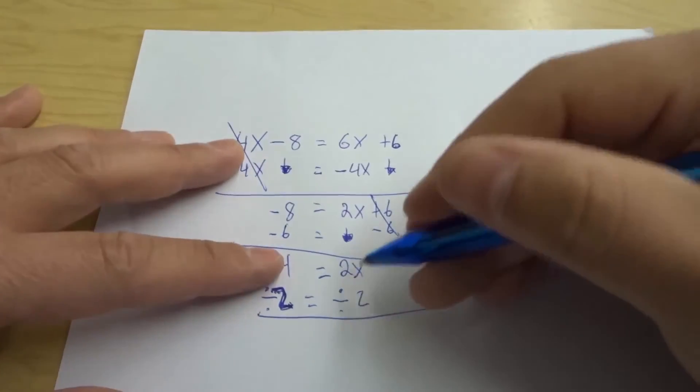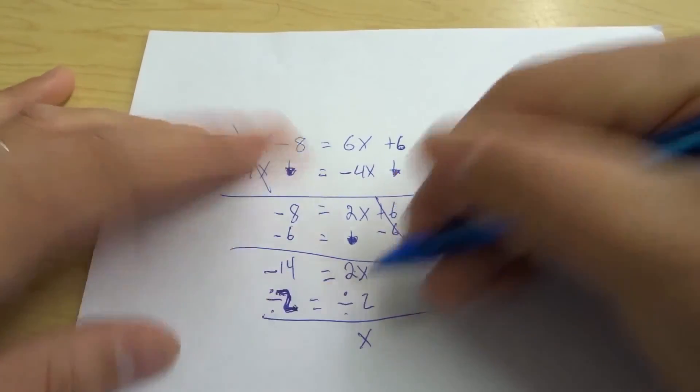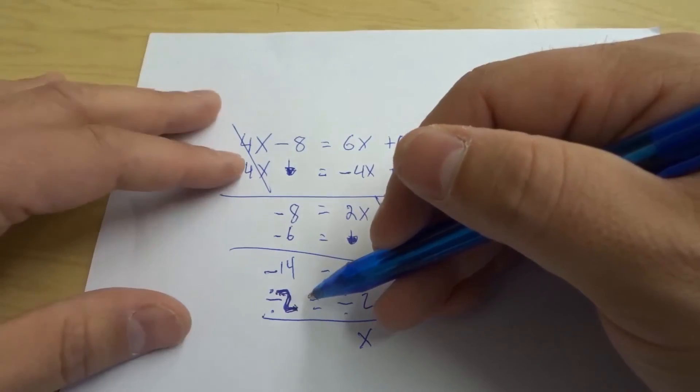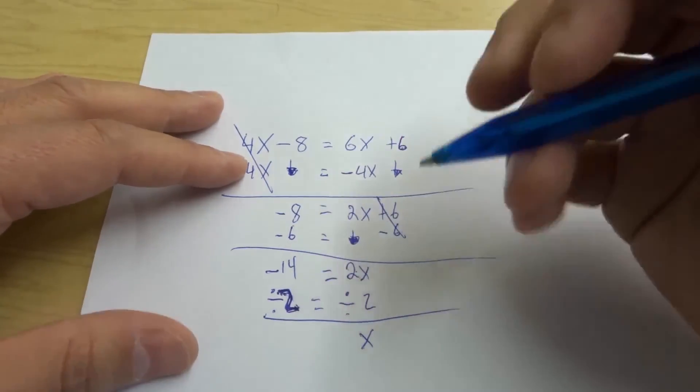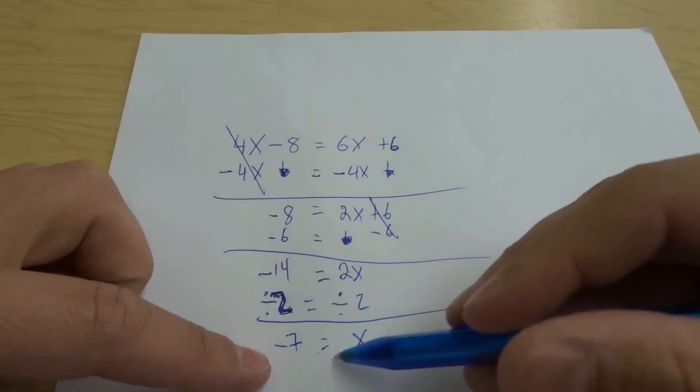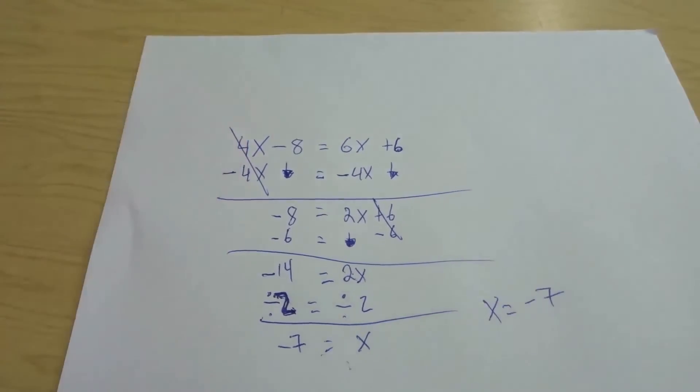So right now we have 2x divided by 2 is equal to just x because we have times 2 divided by 2 and then negative 14 divided by 2 is actually going to be equal to minus 7. So we have minus 7 equals x or x equals negative 7 just like that. That is our answer.